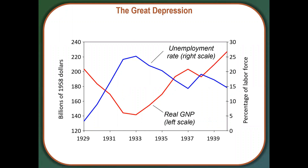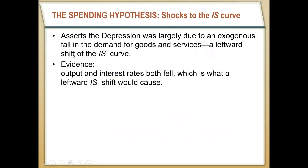John Maynard Keynes primarily came up with the ISLM model in response to the Great Depression. At the start of the Great Depression, unemployment increased really significantly, going from below 5% in 1929 all the way above 25% by 1933. At the same time, total spending decreased, with GDP falling from about $200 billion in 1929 to below $140 billion in 1933. Keynes said this decline in spending and increase in unemployment primarily came from a leftward shift in the IS curve — an exogenous shock.